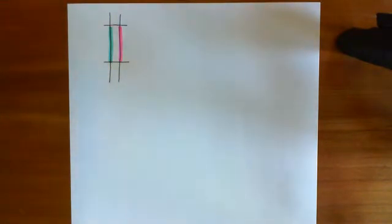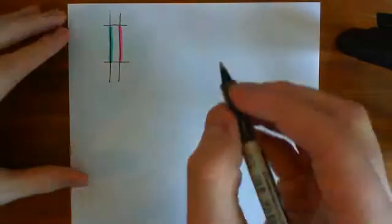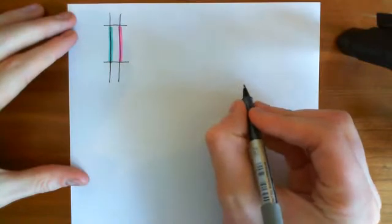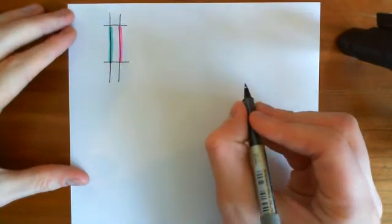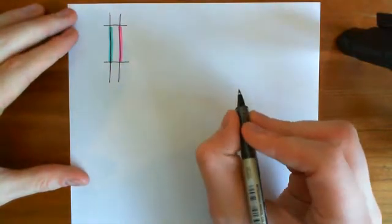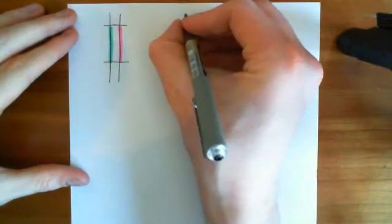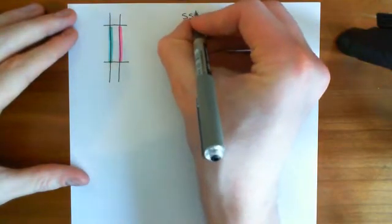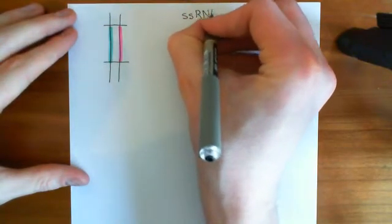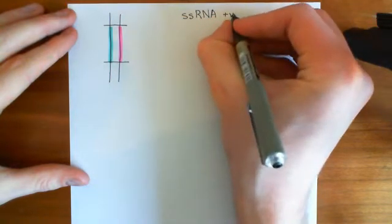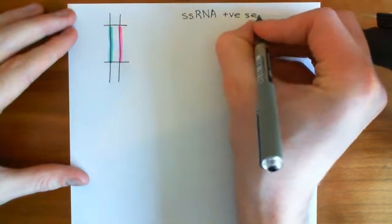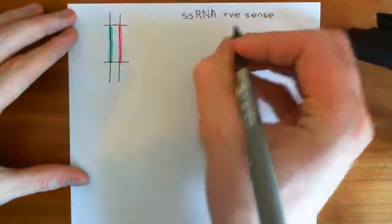Here is the provirus. I just want to remind you of the genome of the HIV virus that we studied quite a long time ago. This picture was of the single-stranded RNA, which is positive sense — the RNA which was within the capsid, basically within the virus.